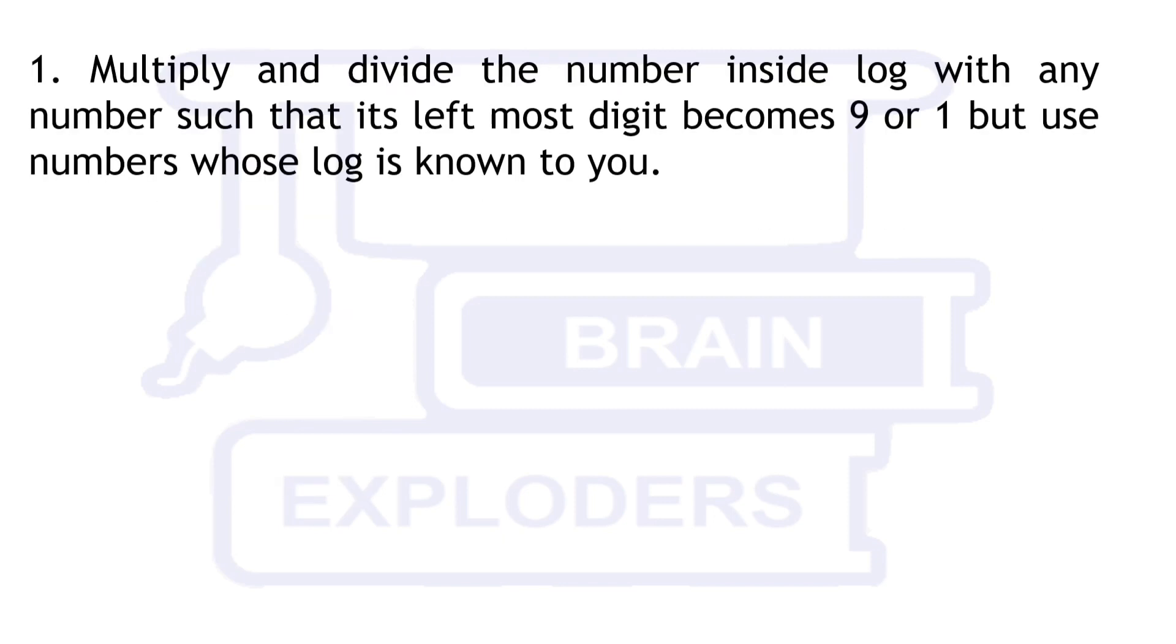First step is to multiply and divide the number inside log with any number such that its left most digit becomes 9 or 1, but use numbers whose log is known to you. In the first example, if we divide 29 by 3 then the value is 9.667. So we will divide and multiply 29 by 3. Using the properties of log, we can write log 9.667 times 3 equals to log 9.667 plus log 3.